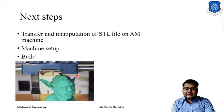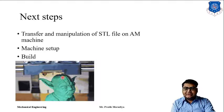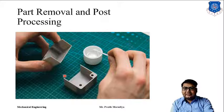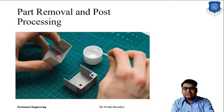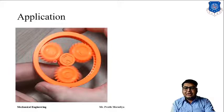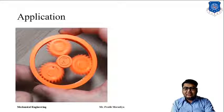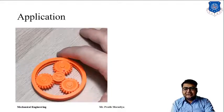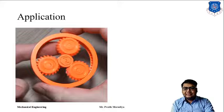Once the STL file is built, we transfer it to the machine, set up the machine, and begin the building process. The building process is also layer by layer, producing the complete part. After building, we remove the part and clean it — here you can see a person cleaning a 3D printed part — and then perform any necessary post-processing.